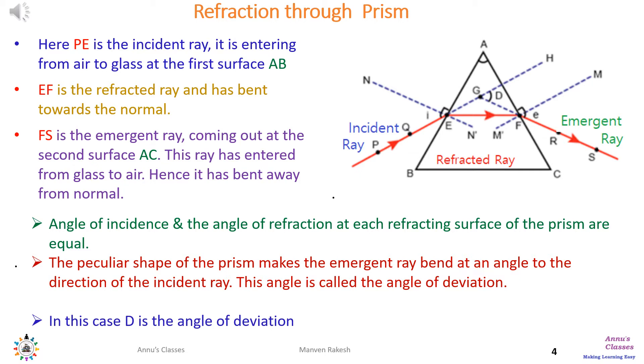The angle of incidence and the angle of refraction are both equal. The peculiar shape of the prism will make the emergent ray bend at an angle to the direction of the incident ray. This angle is the angle of deviation D.